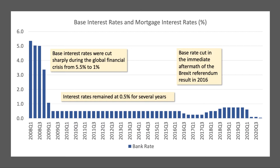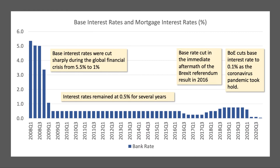Base rates then started edging up slowly towards 1% in 2018-2019, but as you can see from the chart, the rate of interest was cut to 0.1% — essentially zero — as the coronavirus pandemic took hold and the economy went into lockdown, with GDP falling by more than 20% within the space of a few months. That's where they are at the timing of this video: 0.1% in the UK, obviously historic lows.